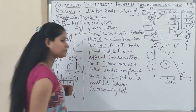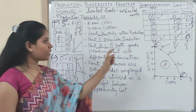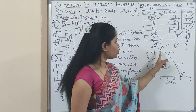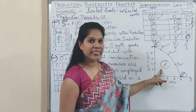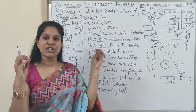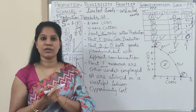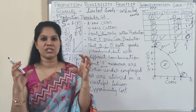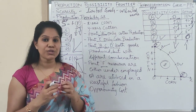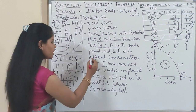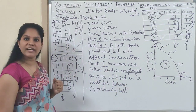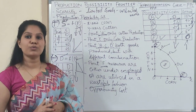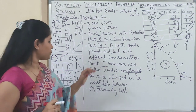Anything that comes below the production possibility curve means you are under-utilizing resources — you have resources but don't know how to use them, or your resources are unemployed, or you are using them in a wasteful manner. This point indicates you are underemploying your goods and services or totally wasting what is available.